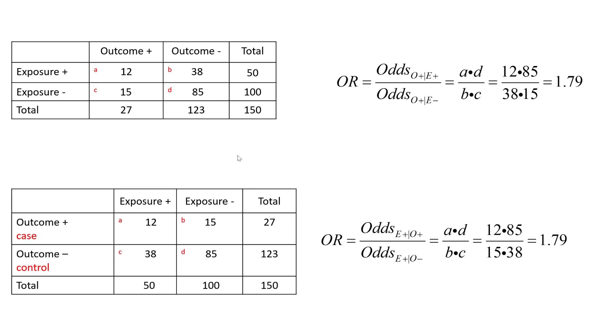And this is why we calculate the odds ratio with cross multiplication. In the case of the cohort study, it's a times d over b times c. If you look at the second table, which more accurately reflects the case control design, all we've really done is split cells b and c.